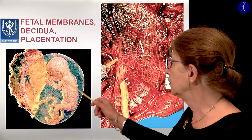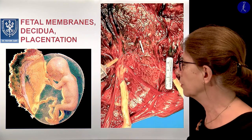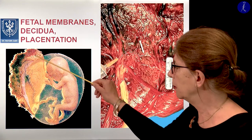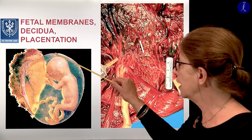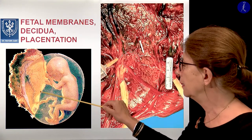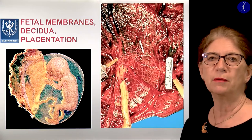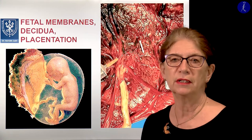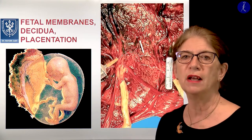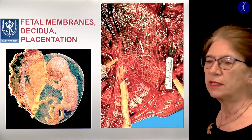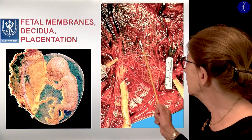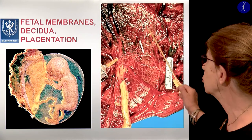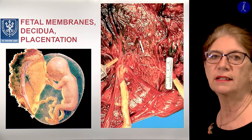Here you see a fetus about in the fourth month. There you see the umbilical cord connecting to the placenta, and this is the amnion, and the amniotic cavity is filled with the amniotic fluid. This is a preparation after an abortion, so it's an artificial fill-up of the amniotic sac. And this is a picture of a piece of a placenta, where this shining layer on the surface is the amnion.